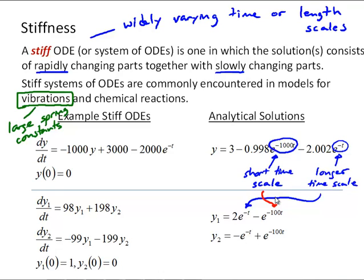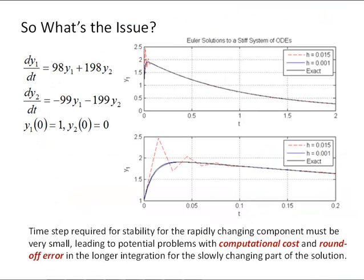So let's look at why this can pose problems for a numerical solution. So what's the issue? So here's some example Euler solutions to the same stiff system of differential equations. So I'm showing the exact solution and time steps of h equals 0.015 and h equals 0.001. And what you see here is even with a relatively small time step of 0.015 we see some instability in the solution.